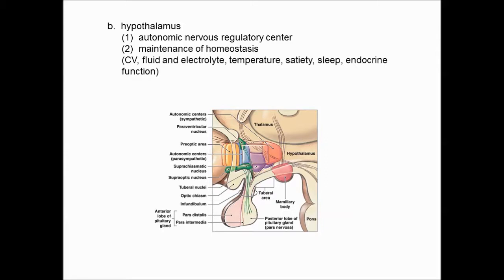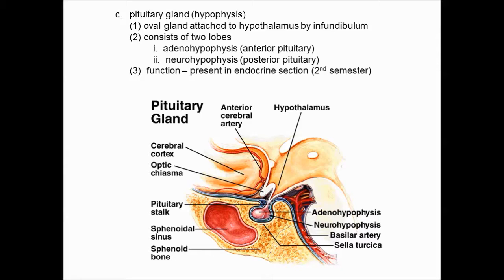We'll save the hypothalamic-pituitary axis story for the end of second semester. Just below the hypothalamus is the pituitary gland, which is really part of the nervous system, especially the neurohypophysis. It's divided into two lobes: the anterior pituitary, or adenohypophysis, and the posterior pituitary, called the neurohypophysis. These are really different structures histologically and functionally, and we'll cover the eight or ten hormones produced by those parts in second semester.